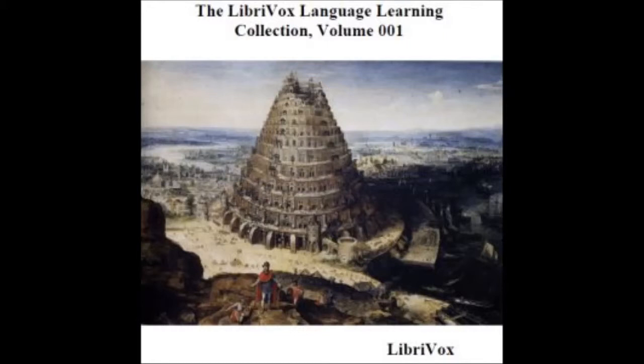C has before E and I the sound of S, as sincerely, centric, century, circular, cistern, city. Before A, O, and U it sounds like K, as calm, concavity, copper, incorporate, curiosity, concupiscence. C might be omitted in the language without loss, since one of its sounds might be supplied by S and the other by K, but that it preserves to the eye the etymology of words, as face from faces, captive from captivus.